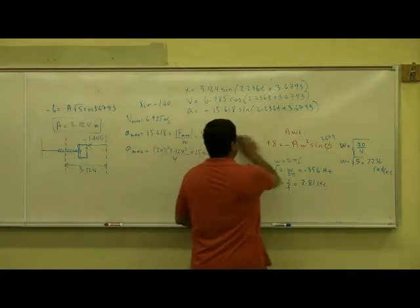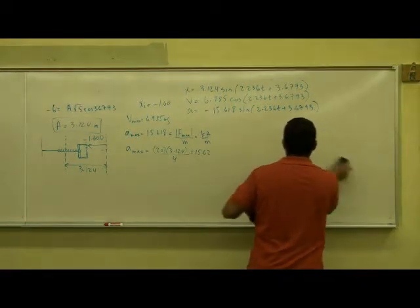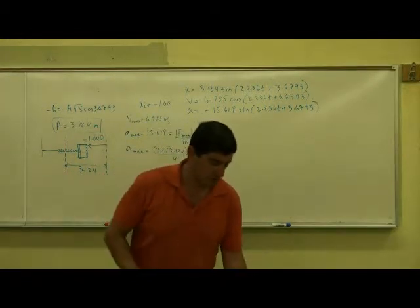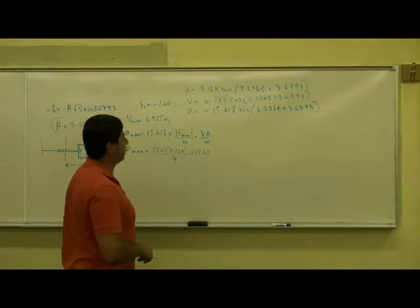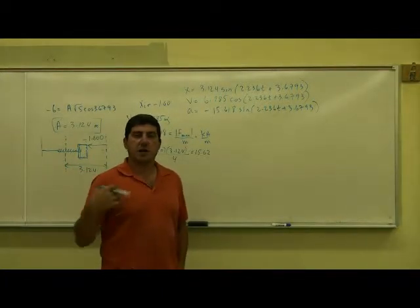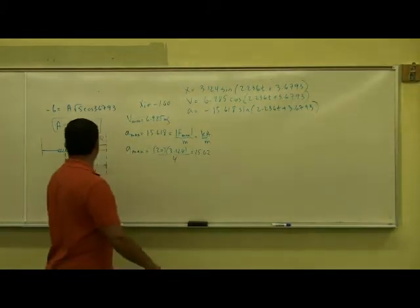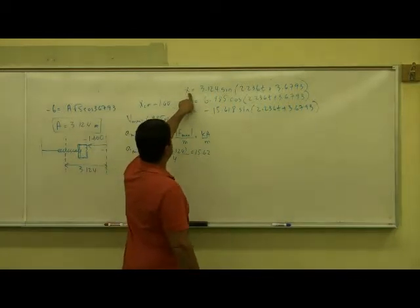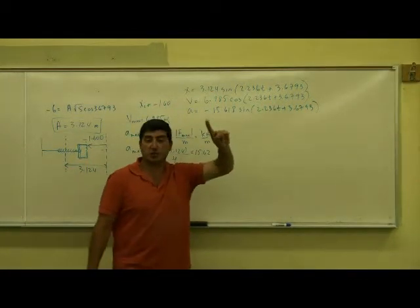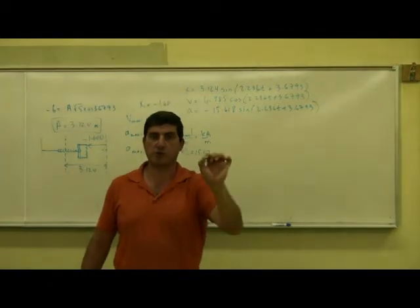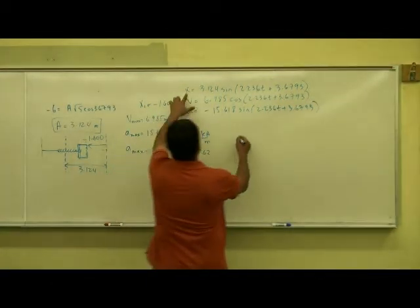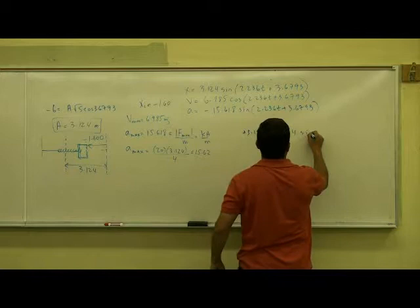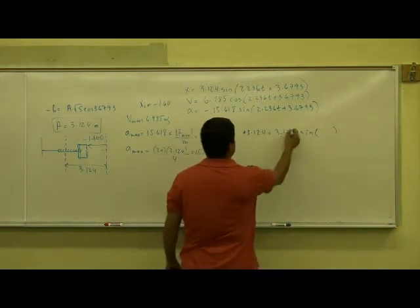Now, once you have the equations of motion, you can then answer any kind of question about that that you want. What was the question? Well, one of the questions was, how much time does it take for this block to reach the most stretched position? That means we're going to take here 3.124. When it's most stretched, what's the value of X? 3.124. Positive 3.124, right? So, you put there positive 3.124. And then whatever is in the parenthesis, that's equal to 1.